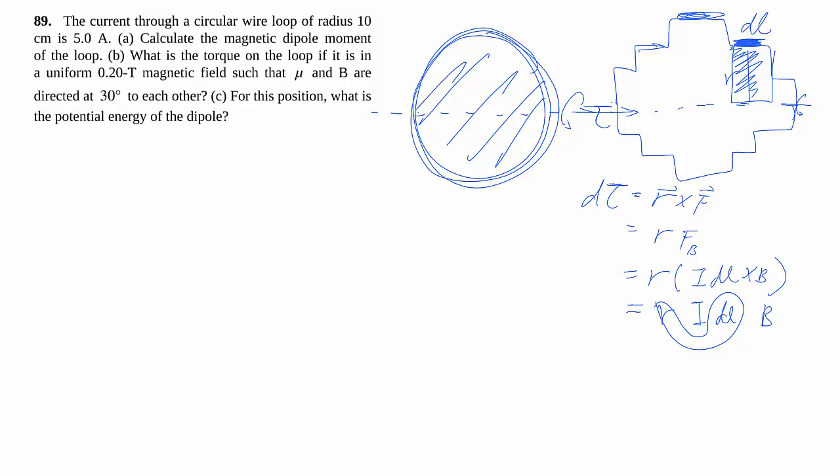So it works out that no matter what the loop is shaped like, we can make use of this quantity called the magnetic dipole moment. This n here refers to if you have multiple loops.